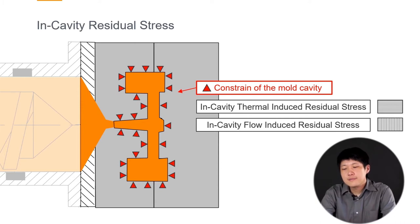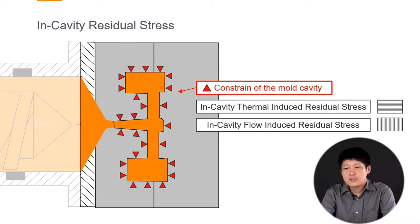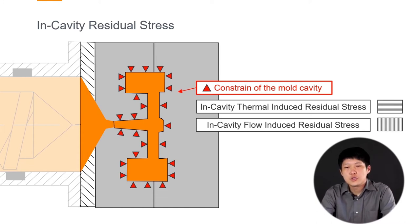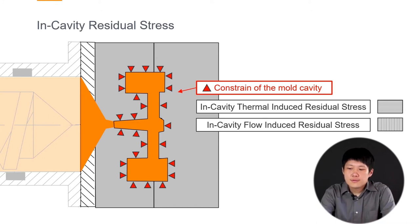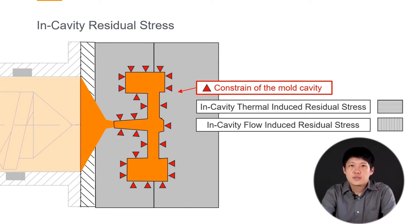At the same time, because the cooling channels keep working and keep taking heat away, the status of the material also tries to transform from the melted state into the solid state. During this transformation, the material inside the cavity will change a lot because the specific volume of the material tries to change. But there is a constraint around it, so this tendency will become the in-cavity residual stress.